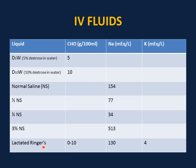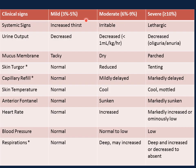Lactated Ringer's is another volume expander commonly used as boluses. It has 130 mEq of sodium per liter and is hypotonic compared to normal saline. It also contains potassium. Normal saline is much more preferred as a bolus over Lactated Ringer's because Lactated Ringer's can be associated with electrolyte disturbance and hyperkalemia. It is very important to be familiar with the clinical signs and symptoms of dehydration and its classification into mild, moderate, and severe.